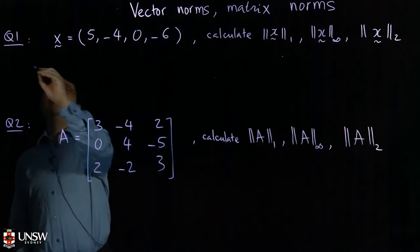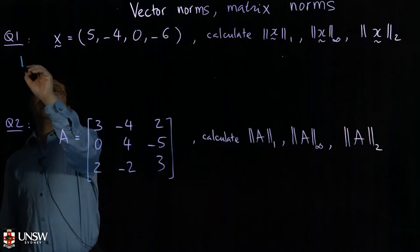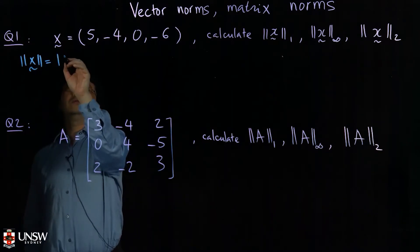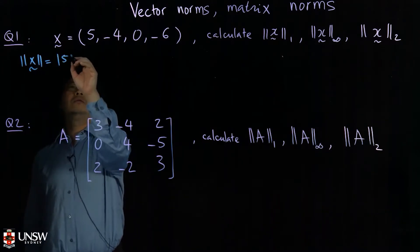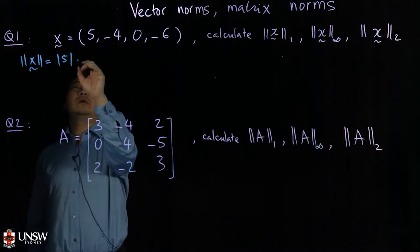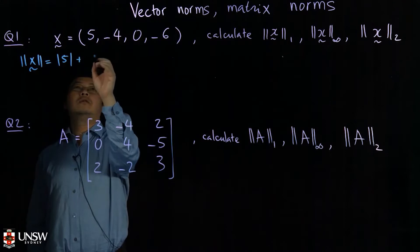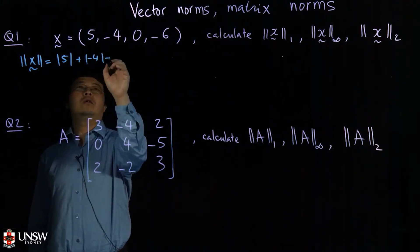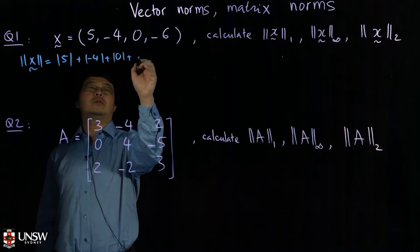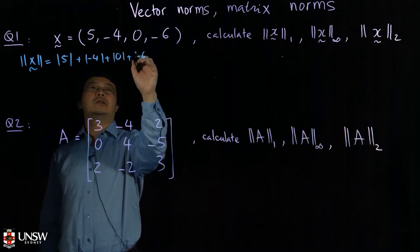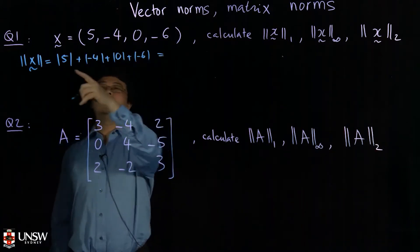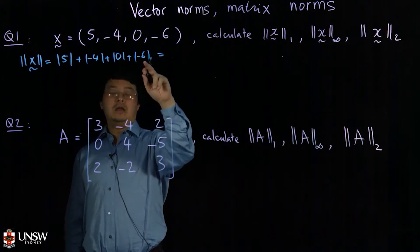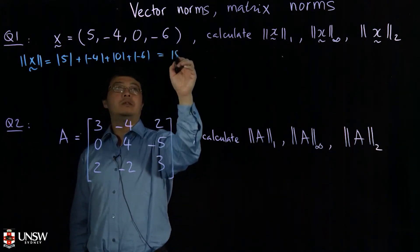The one norm of the vector x is just the absolute value of all the entries. So |5| + |-4| + |0| + |-6| gives you 5, plus 4 is 9, then 9 plus 6 is 15.